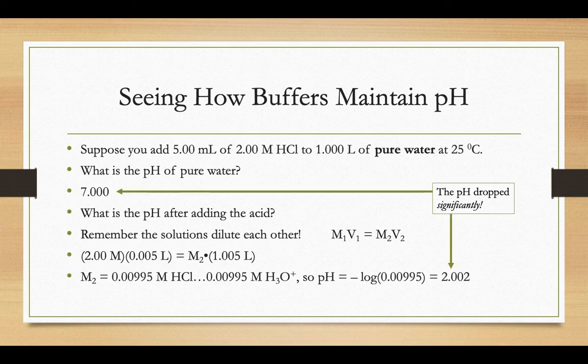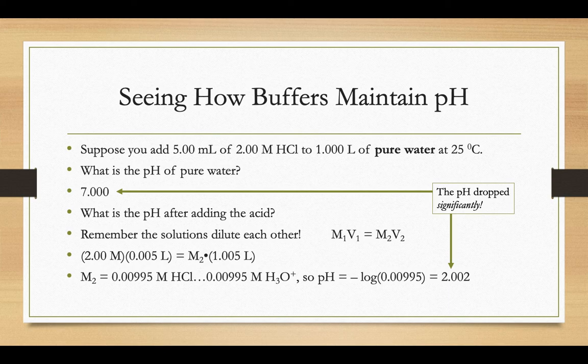So just by adding a splash of acid, that's not a lot, right? Five milliliters of acid being added to a liter's worth of water and the pH drops significantly from seven all the way down to two.